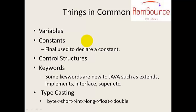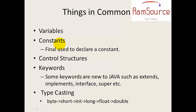Next, things in common between C, C++ and Java. First, variables — similar to C++ and C, variables are subject to change. But constants cannot be changed throughout the program. In C++, to declare a constant we use the #define directive or the const keyword, whereas in Java we use the final keyword. When we use final, it is declared as a constant.